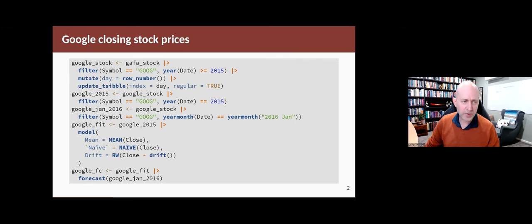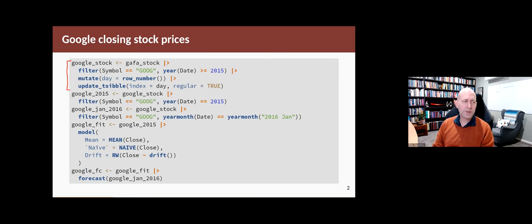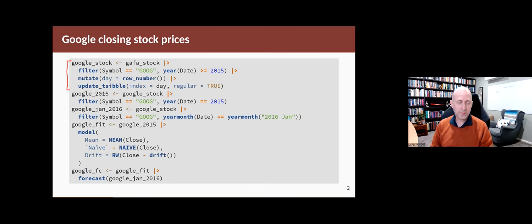First of all, we'll set up an example by using code we've already used previously in this section. We just need to set up the relevant objects so that we can do the evaluation. The first part takes the stock price data in the package and filters out just the Google stock price from 2015 onwards, then re-indexes it using the number of trading days since the start of the series rather than the date, because there are days where no trading occurs.